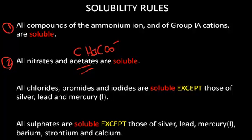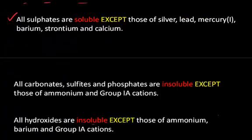All chlorides, bromides, and iodides are soluble except those of silver, lead, and mercury-1. All sulfates are soluble except those of silver, lead, mercury-1, barium, strontium, and calcium. So there are some exceptions to the sulfates and to the halides.